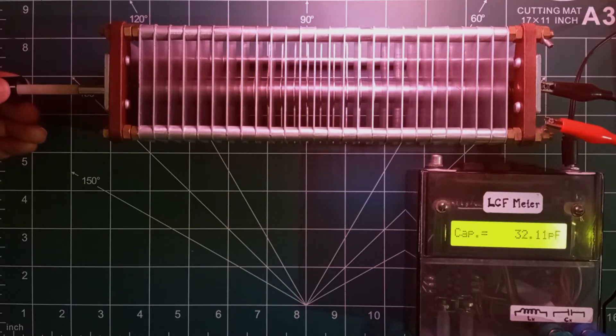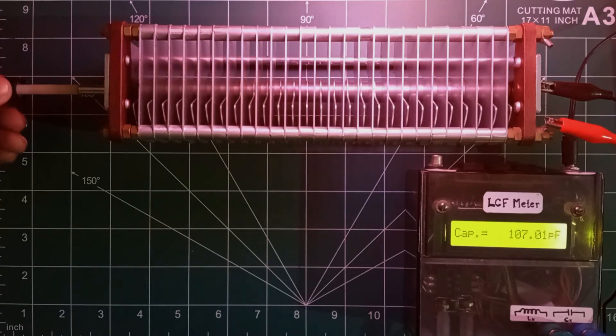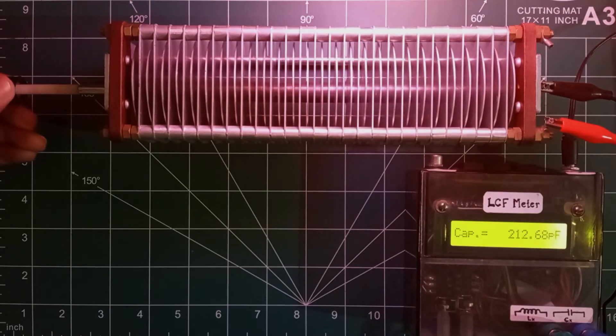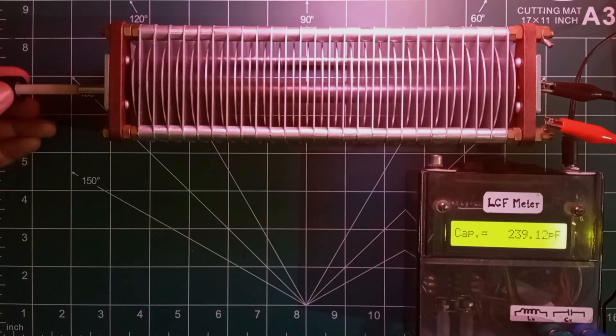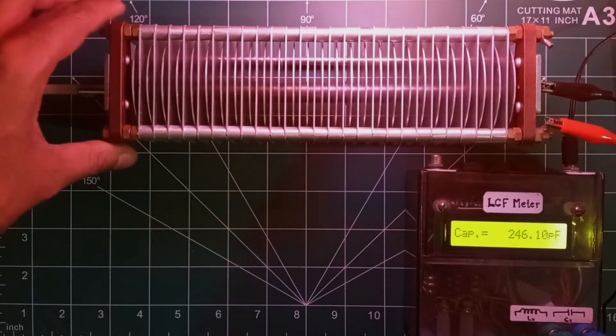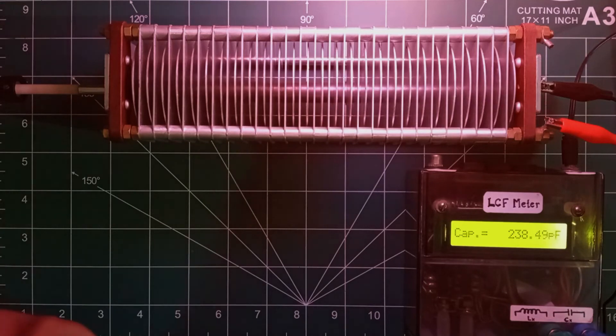Now let us slowly rotate the blades in such a way that I can measure the maximum capacitance. This is the position where I am getting the maximum capacitance. It's measuring around 240 picofarads. Considering the efficiency of my homebrewed meter, I can approximate this with 250 picofarads, that's the nearby range.